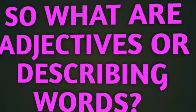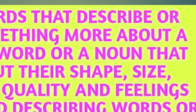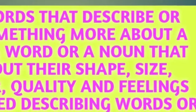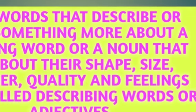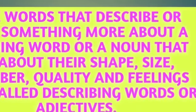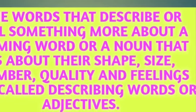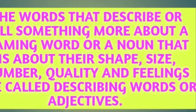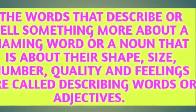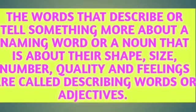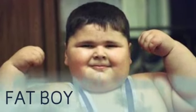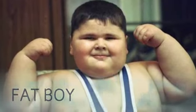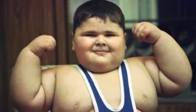So what are adjectives or describing words? The words that describe or tell something more about a naming word or a noun — that is about their shape, size, color, number, quality, and feeling — are called describing words or adjectives. Here are some more examples: fat boy, hot coffee, round ball, angry bird, poor beggar, small ant.